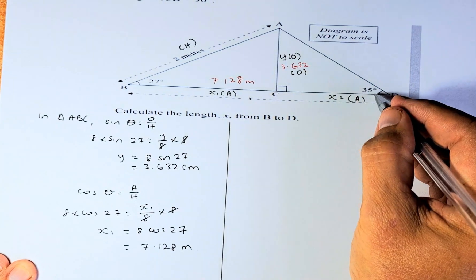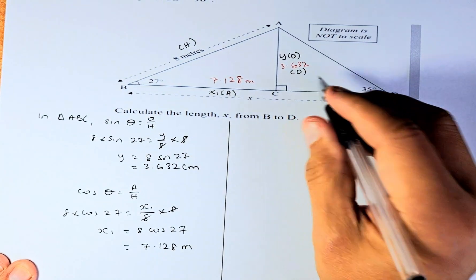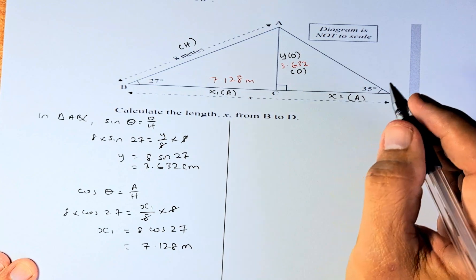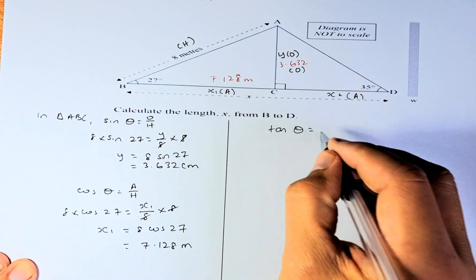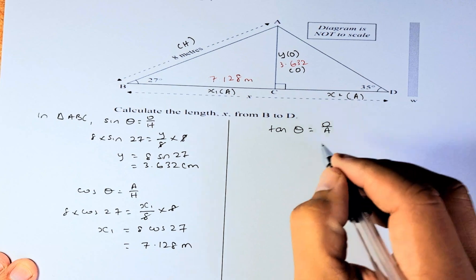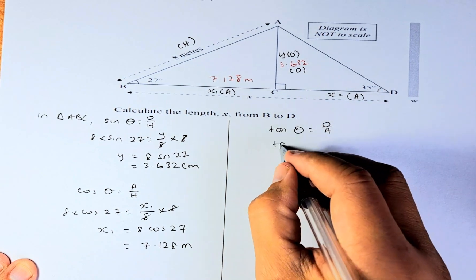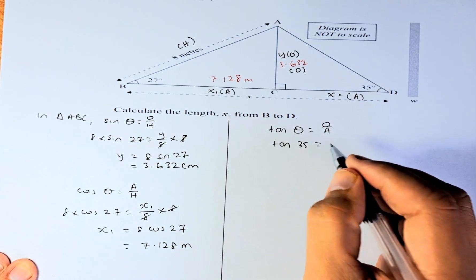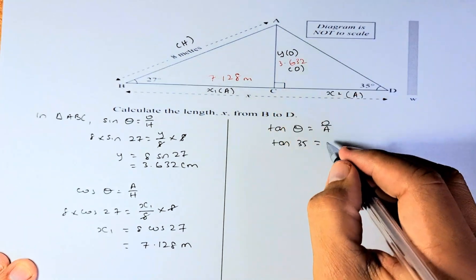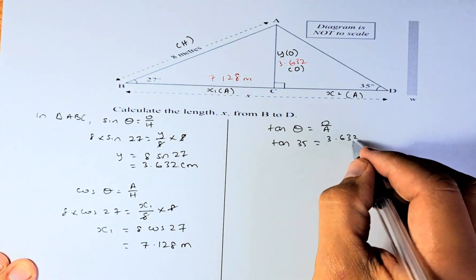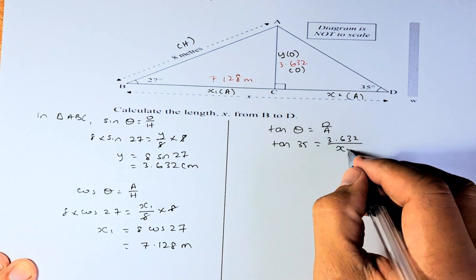Now we've got O and A, so we have to use the TOA formula. Tangent theta equals O over A. Theta is 35, so tangent 35 equals O, which is 3.632, divided by X2.